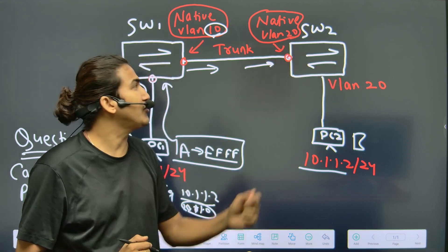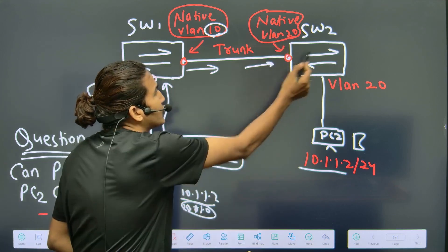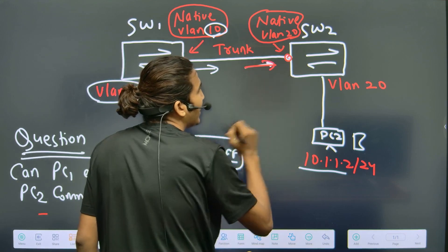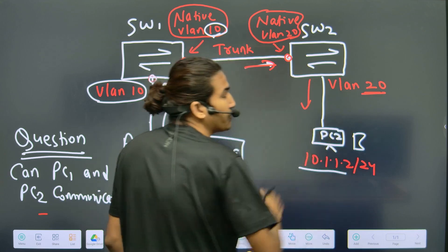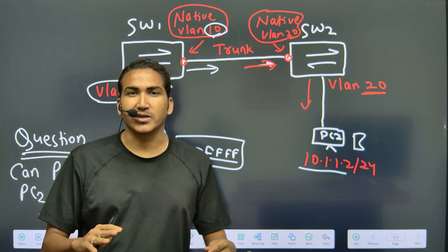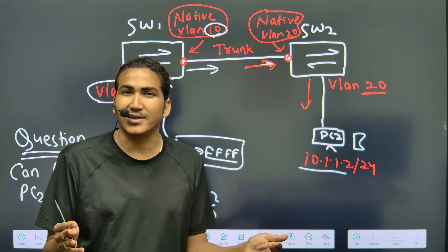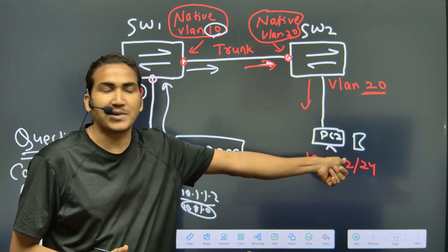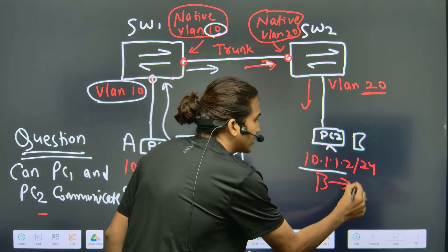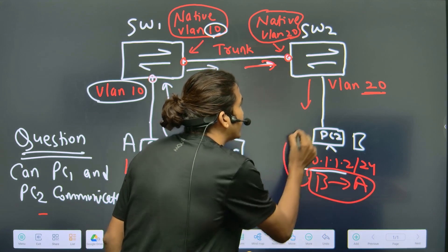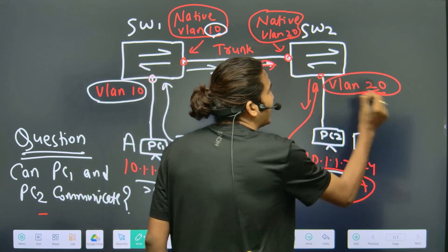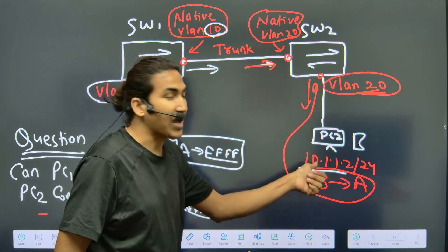The native VLAN on Switch 2 is VLAN 20. Because there is no tag on the frame, Switch 2 treats this traffic as belonging to VLAN 20 and forwards it out the port connected to PC2, which is also in VLAN 20. PC2 receives the ARP broadcast and generates an ARP reply with source MAC B and destination MAC A, sending it to Switch 2.